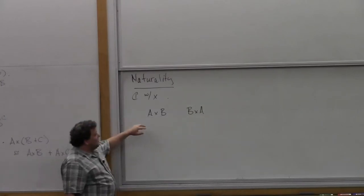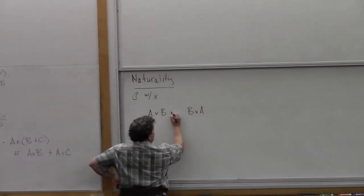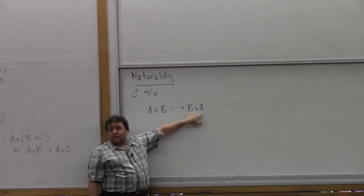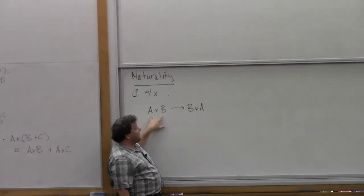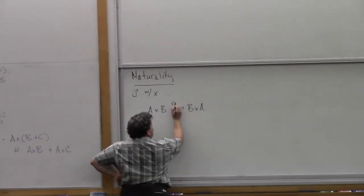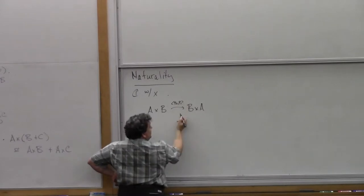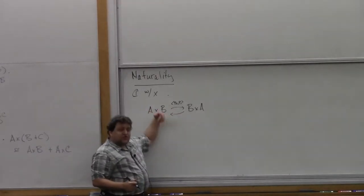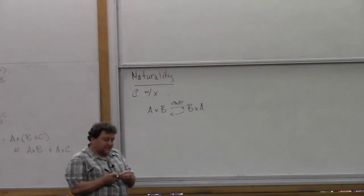Now it's easy to show that these two objects are always going to be isomorphic. The map going one way: maps into a product are specified by saying what their two projections are, so the projection down to B would just be the second projection from this. This is going to be the pair (P2, P1). And similarly coming back. You can check by using the universal mapping property of the binary product that this indeed gives you an isomorphism.